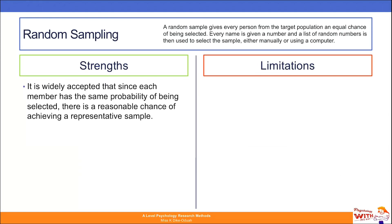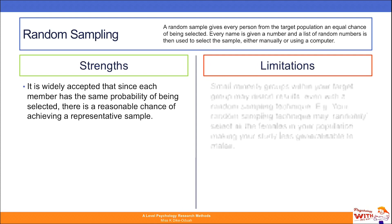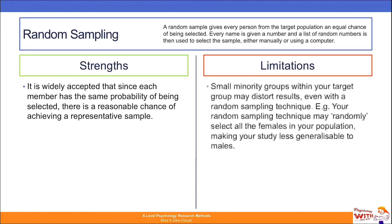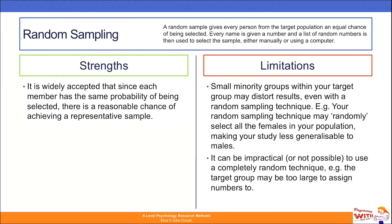For random sampling, a real strength is that every member has the same probability of being selected, so there's a reasonable chance of achieving a representative sample. However, a limitation is that you may still get an unrepresentative sample — your random selection may randomly pick all females, making the study less generalizable to males. It can also be impractical, as you would need literally all members of your population to give them an equal opportunity of being selected.